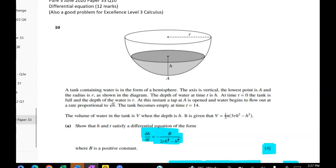So we've got a tank with water in it and the low point of that tank is at point A, so that's here, and the radius of the tank is R. R is fixed, it's the distance from the center to here. The depth of water at time T is H. So H is variable and at the start at time T equals zero the tank is full and the depth of the water is R.